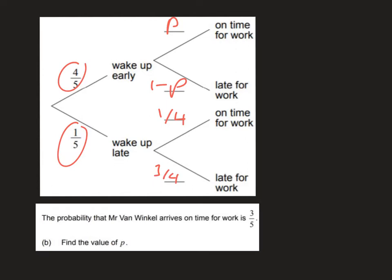Part B then tells us the probability that Mr. Van Winkle arrives on time for work is three-fifths, and we are asked to use this to find the value of P.